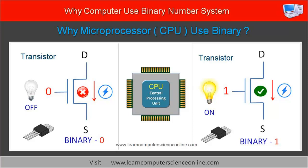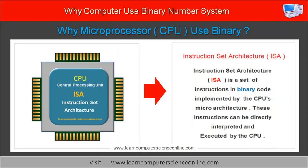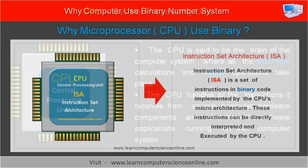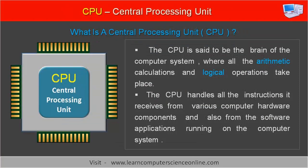Now let us summarize the conclusion. The computer uses the binary number system because the processor inside the computer can execute only binary commands. The microprocessor chip implements a microarchitecture in terms of instruction set architecture. The instruction set architecture is a set of binary commands that the processor chip supports, and these commands are hard-wired into the processor chip. The microprocessor is the main component in a computer system that executes the program and performs the desired operations as per the instruction set architecture. And for these reasons, the computer uses the binary number system.